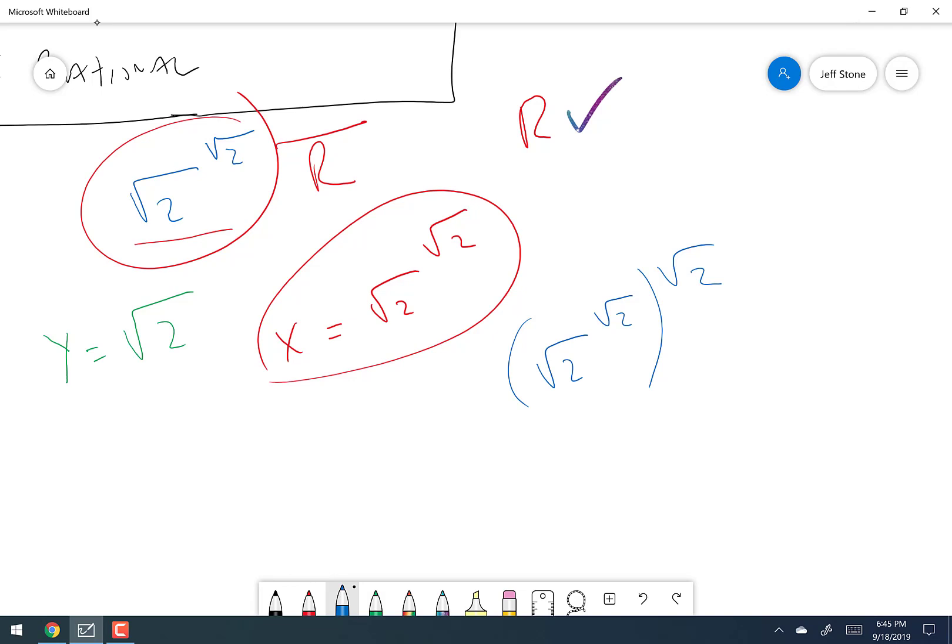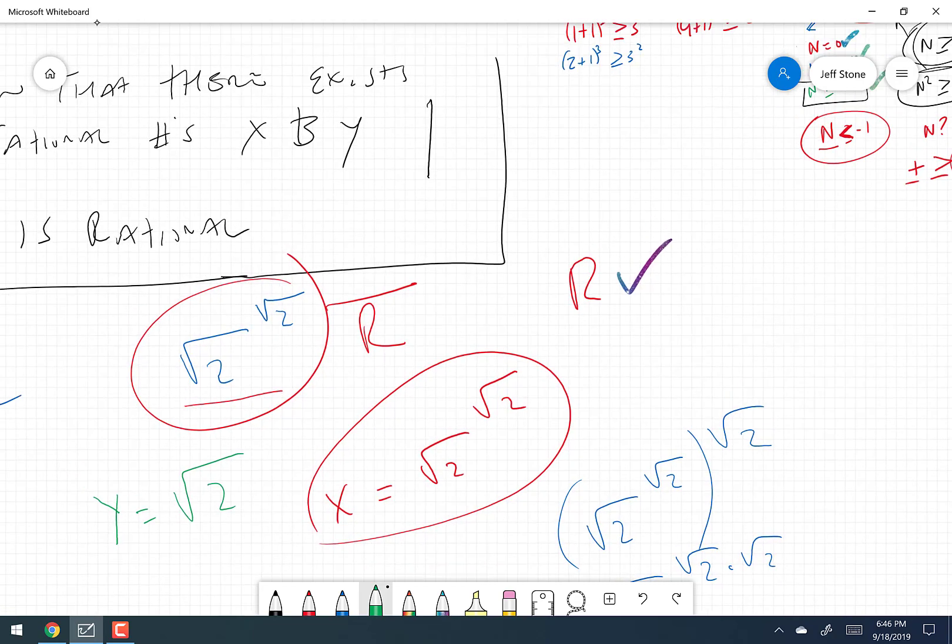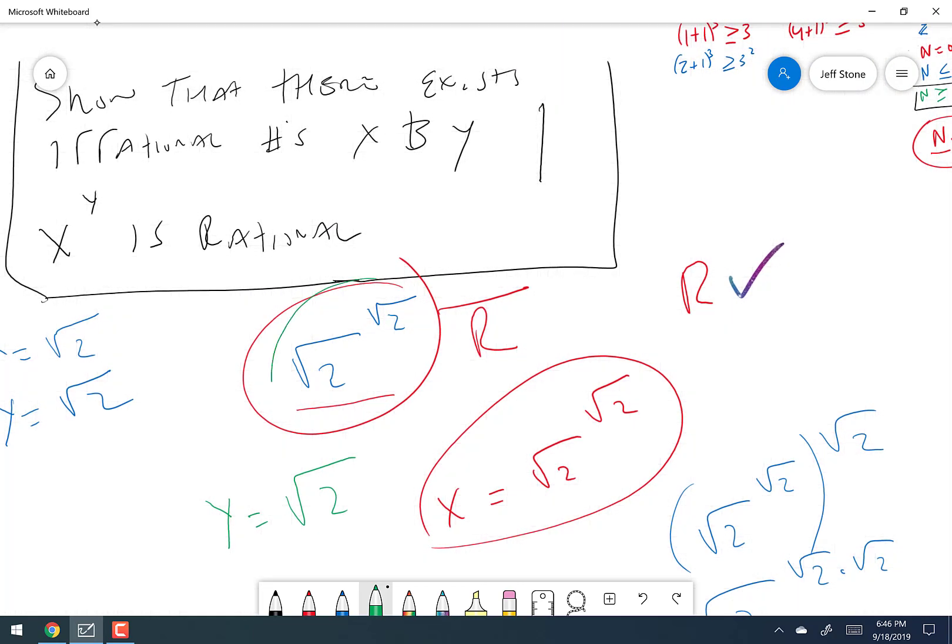Right? Which is the same thing as saying this. Which is 2. Square root of 2 squared is 2, right? That's a rational number, is it not?